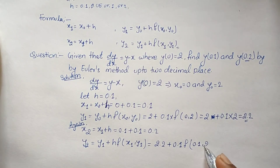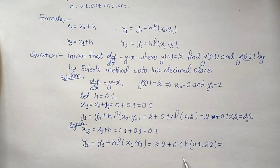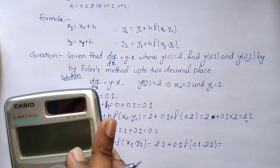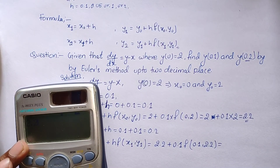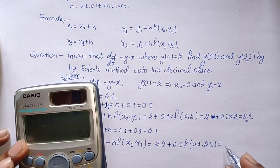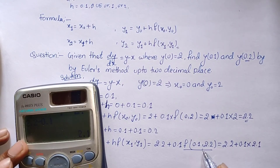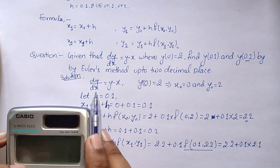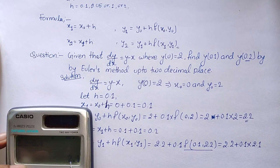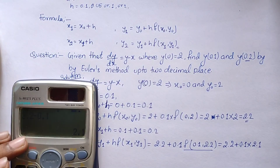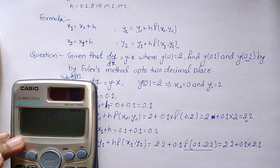To find f(0.1, 2.2), we put the values of x and y into the equation y minus x: so 2.2 minus 0.1 equals 2.1. Therefore y₂ equals 2.2 plus 0.1 times 2.1, which gives 2.2 plus 0.21, so y₂ equals 2.41. Thus y(0.2) equals 2.41.